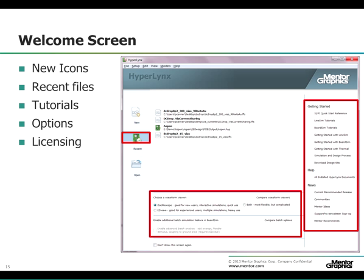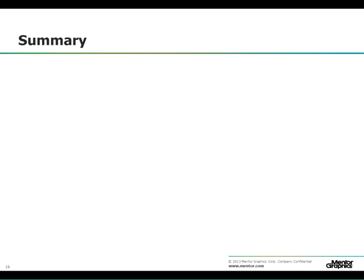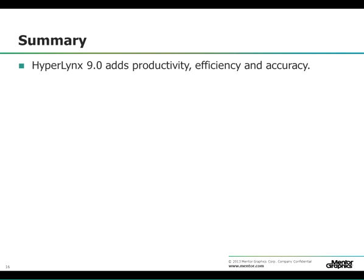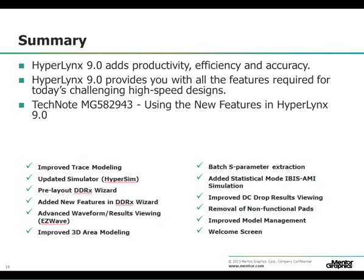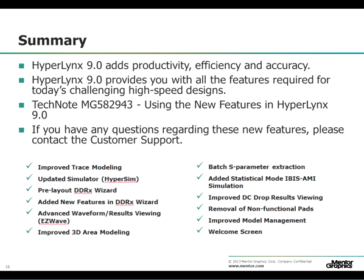All the icons and buttons have also been updated in both LineSim and BoardSim. As mentioned in this presentation, Hyperlinks 9.0 adds accuracy, efficiency, and productivity. It is equipped with signal integrity and power integrity features required for today's challenging high-speed designs. For more detailed technical information on these new features, please see Tech Note MG582943. If you have any questions regarding these new features, please contact customer support. Thank you.